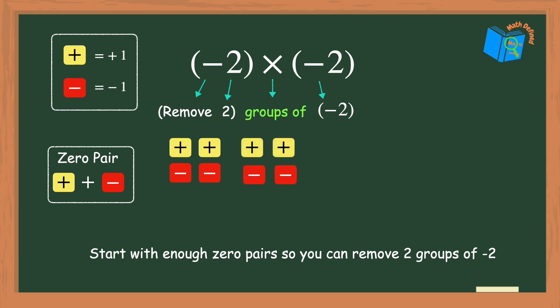Now I'll go back and read the math sentence again. Remove two groups of negative 2. Once I remove these four negative counters you can see that there are four positive counters left. So my answer is positive 4.